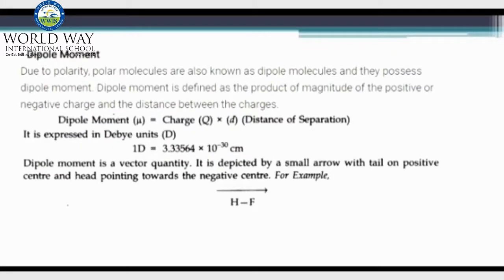Now we are going to study dipole moment. After the development of polarity between the molecules, the polar molecules are also called dipole molecules since they have dipole moment, which is defined as a product of magnitude of the positive or negative charges and the distance between the charges. It is represented by the symbol mu and the unit is Debye.